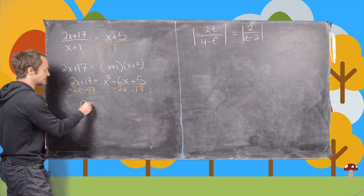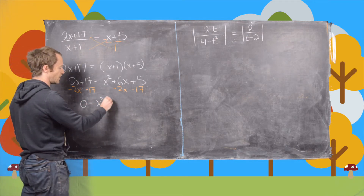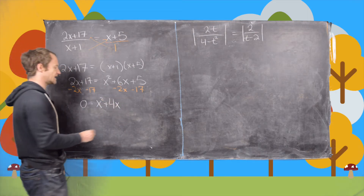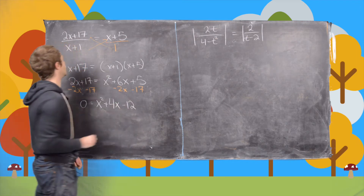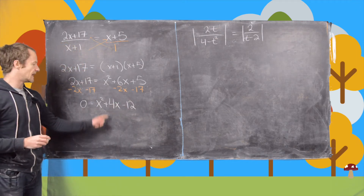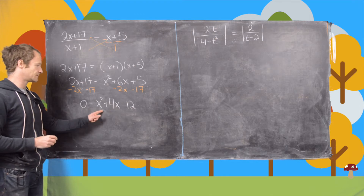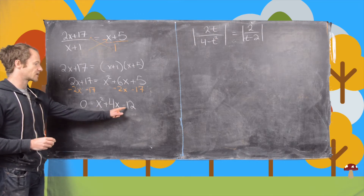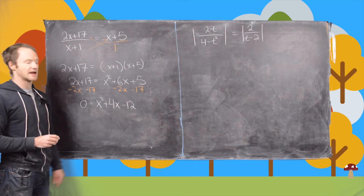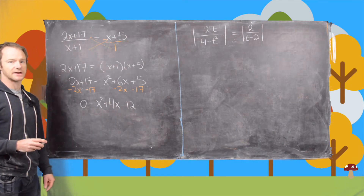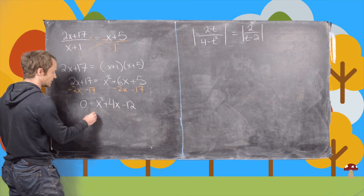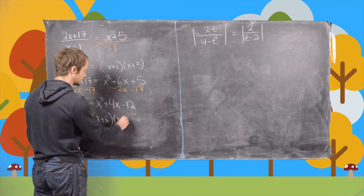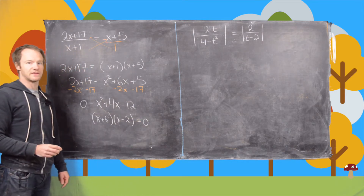That gives us 0 = x² + 4x, and then 5 − 17 which is −12. So we have 0 = x² + 4x − 12. Now we'd like to factor that. We want two numbers that multiply to −12 and add to +4. Notice that's x + 6 and x − 2, so (x + 6)(x − 2) = 0.